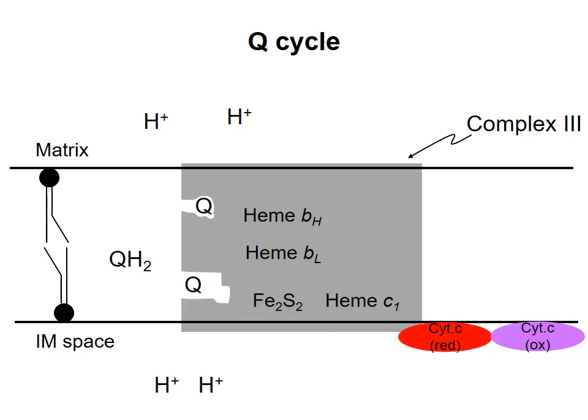The semiquinone loses its remaining electron, but the second electron follows a different path through complex 3. It is transferred to the so-called heme BL, then to heme BH, and then to the coenzyme Q bound at the other site. This forms a semiquinone at that site. We're now at the halfway point of the Q cycle.